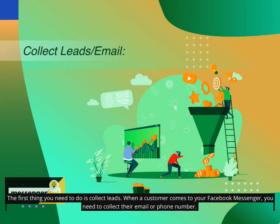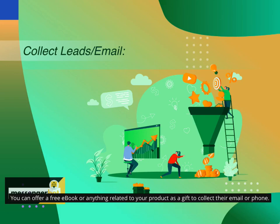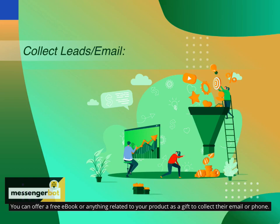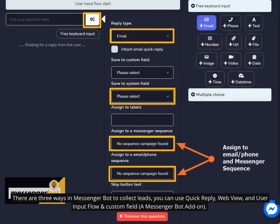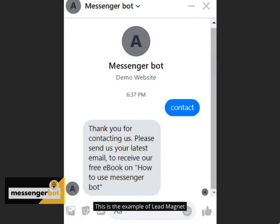The first thing you need to do is collect leads. When a customer comes to your Facebook Messenger, you need to collect their email or phone number. You can offer a free e-book or anything related to your product as a gift to collect their email or phone — in this case, the e-book is the lead magnet. Now you have leads instead of prospects, and they are moving through your sales funnel. There are three ways in Messenger Bot to collect leads: Quick Reply, Web View, and User Input Flow and Custom Field, a Messenger Bot add-on.